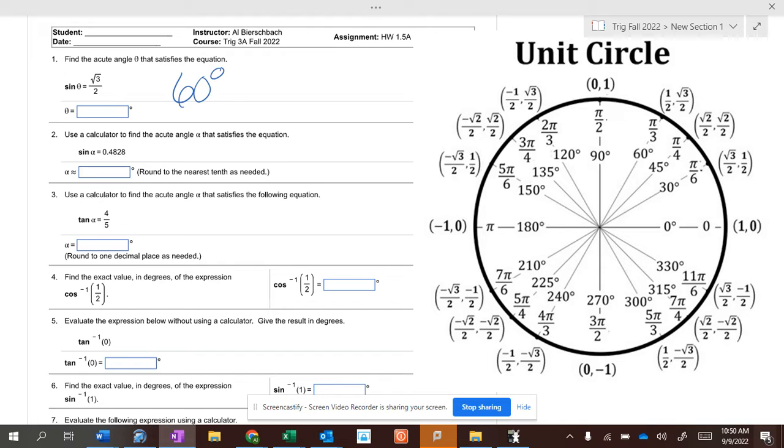Now, how many places on the unit circle is the sine equal to the square root of 3 over 2? Two, at 60 degrees and at 120 degrees. So, what answer do you use?